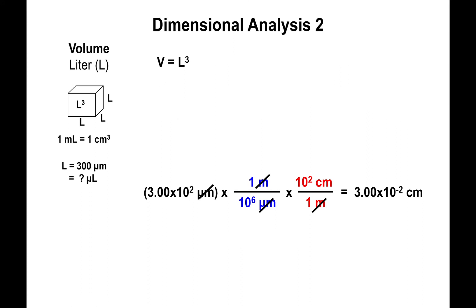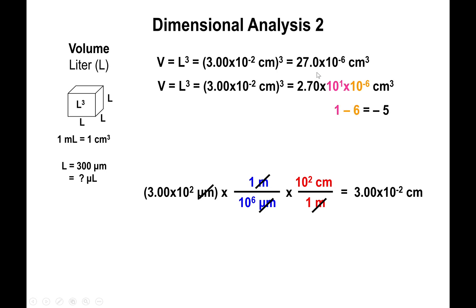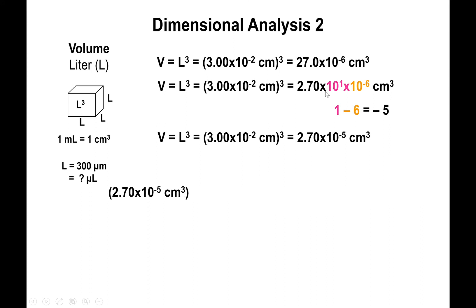Now that we have the length in centimeters, we cube it to get volume. We literally cube the whole thing — enter 3 times 10 to the negative 2 into your calculator and cube that. You'll find this equals 2.7 times 10 to the negative 5. Since you're cubing centimeters, the result is in cubic centimeters.